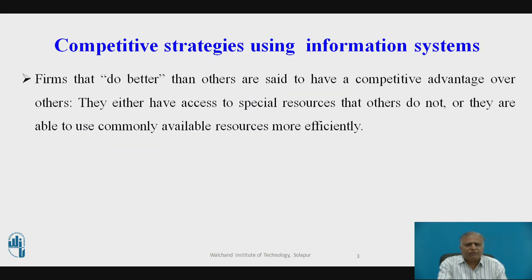Competitive strategies using information systems: firms that do better than others are said to have a competitive advantage over others. They either have access to special resources that others do not, or they are able to use commonly available resources more efficiently, usually because of superior knowledge and information assets. They do better in terms of revenue growth, profitability, productivity growth, and efficiency, all of which ultimately translate into higher stock market valuation than their competitors.